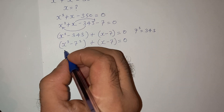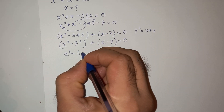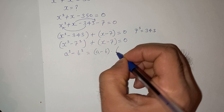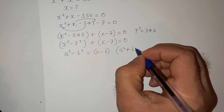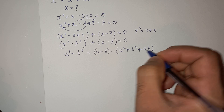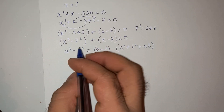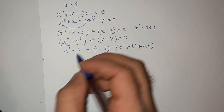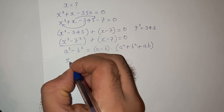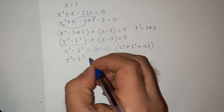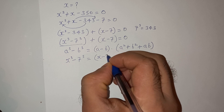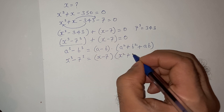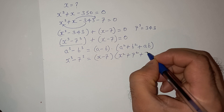Now we know the formula: a³ minus b³ equals (a minus b) multiplied by (a² + b² + ab). So first let's find the value of x³ minus 7³. So x³ minus 7³ equals (x minus 7)(x² + 7² + 7x).